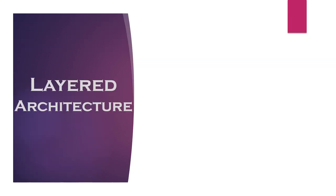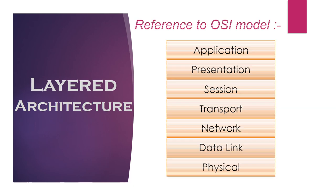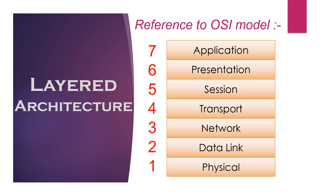Before jumping to CAN architecture, we need to understand the OSI model first. OSI, or Open System Interconnection Model, is a conceptual model that partitions a communication system into 7 abstraction layers. It also defines the communication function of each layer, irrespective of the underlying internal structure and technology.